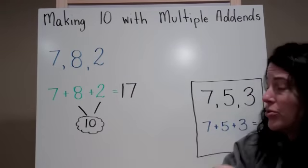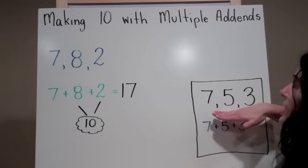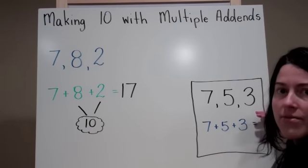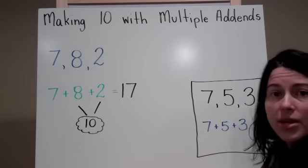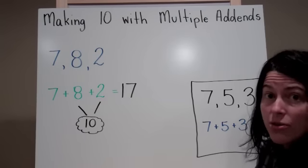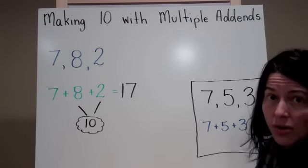Here is a problem for you to solve. Here are your addends: 7, 5, and 3. So 7 plus 5 plus 3 equals. Remember to use your friendly ten to show your work.